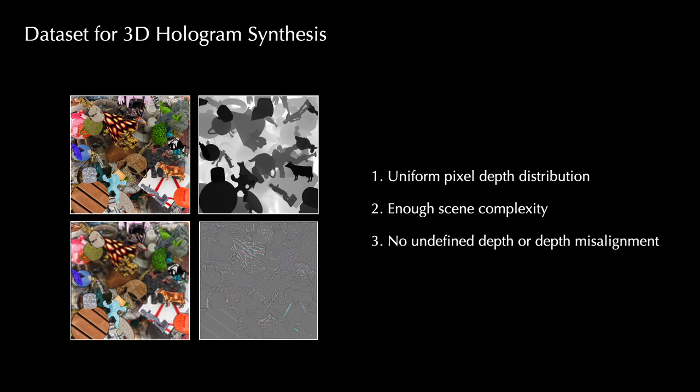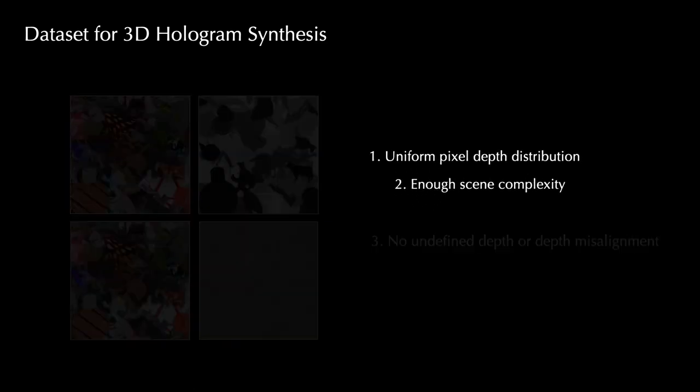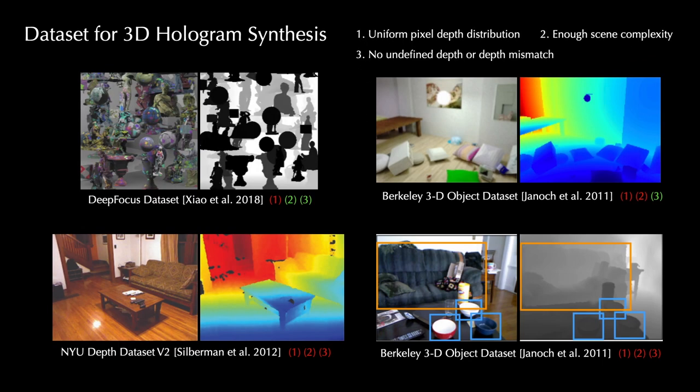To train the CNN, we need a dataset with RGBD images and paired holograms. To learn true 3D holograms, we require the scene to be sufficiently complex and the pixel depth to be distributed uniformly across the 3D volume with no undefined depth values or depth misalignment. However, none of the existing RGBD datasets satisfy all of these requirements,